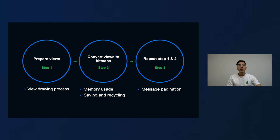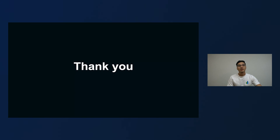To wrap up, there are three steps to the feature. The first one is we have to prepare views, and in this step you have to consider the view drawing process. The second is we have to convert the prepared views to bitmaps, and you have to consider memory usage and saving and recycling. In the third step, you have to repeat the first and second steps, and you have to consider message pagination because a lot of messaging apps have one. So I think after knowing this, everyone can just make their own message capturing feature at home. That was my presentation — thank you for listening.